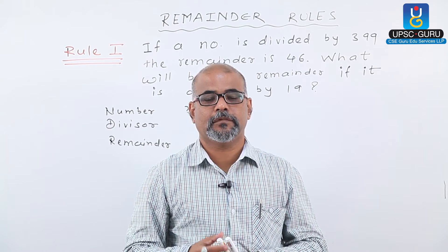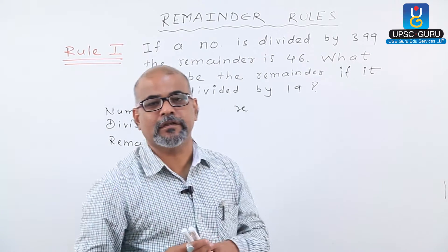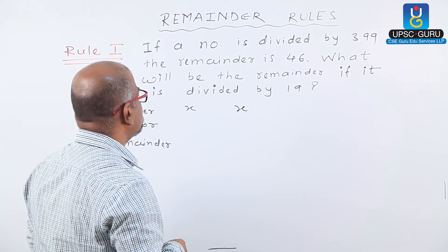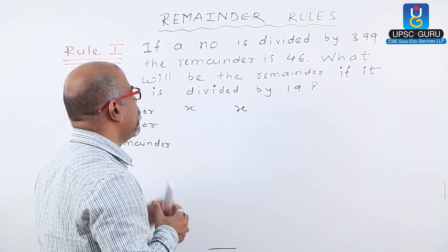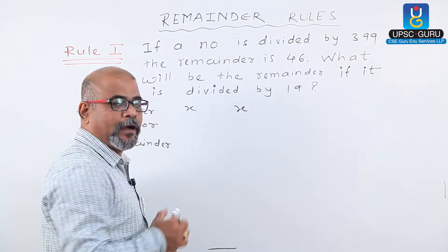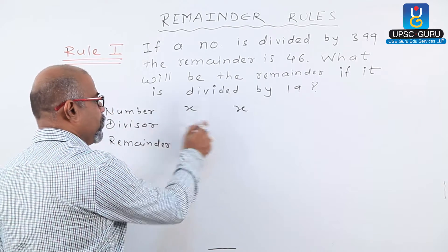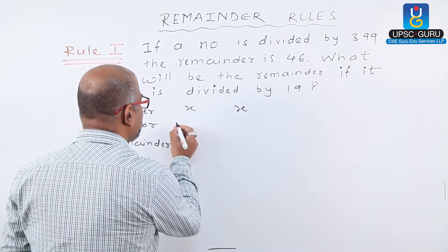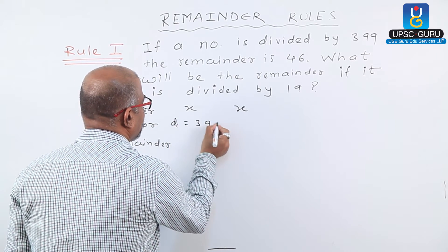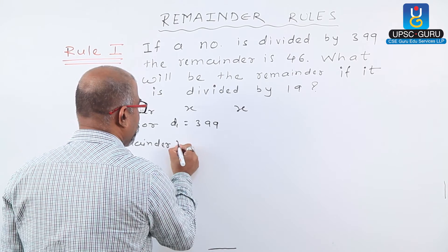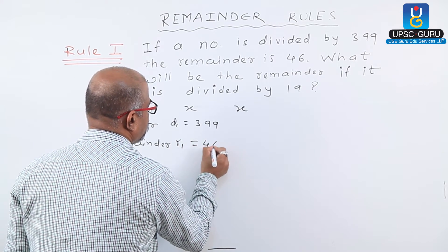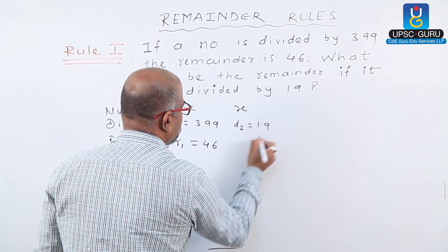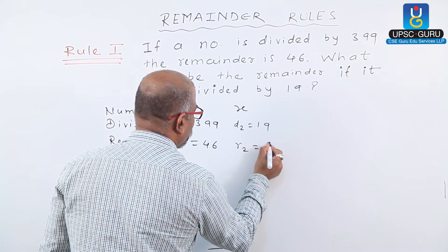Let us solve one application on this. If a number is divided by 399 the remainder is 46, what will be the remainder if it is divided by 19? Let the number be X. The first divisor D1 is 399, remainder R1 equals 46. The second divisor D2 equals 19, and R2 is what we have to calculate.